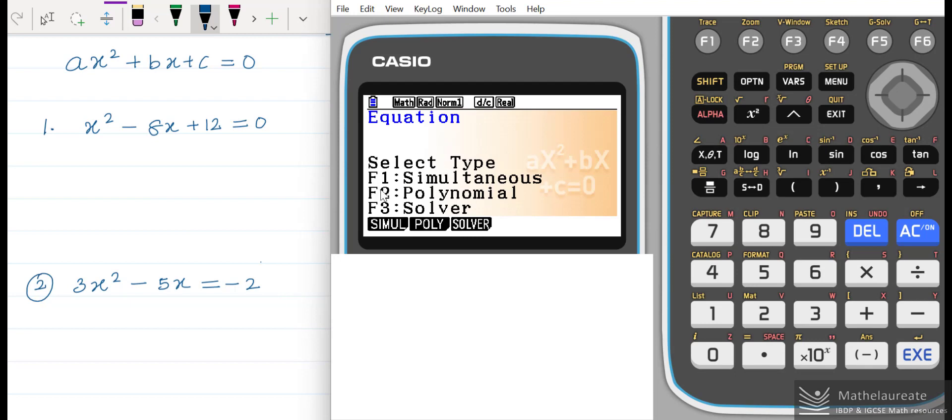Here there are three options: F1 is simultaneous, and you need to press F2 for polynomial, and F3 is solver. We are going to choose F2 polynomial to solve the quadratic equations.